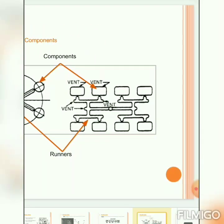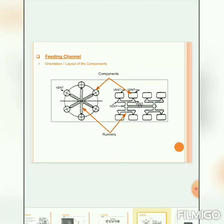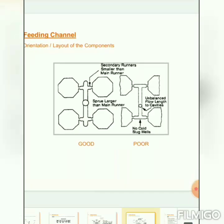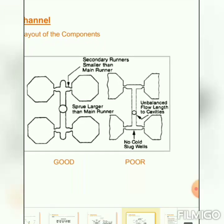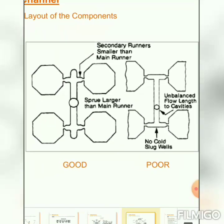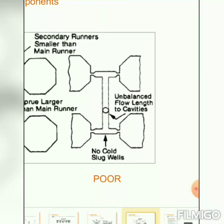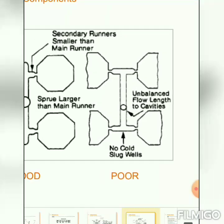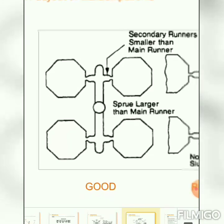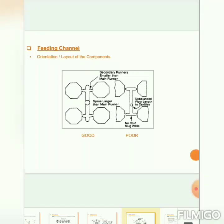Runner types include circular runner and rectangular runner. The runner path is decided as per the shape of the component. The secondary runner should be smaller than the main runner — this is a most important consideration. You can see the good design versus the poor design, because no cold slug wells are provided in the poor design.